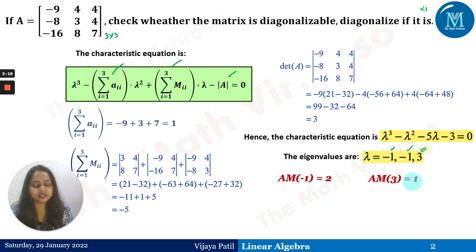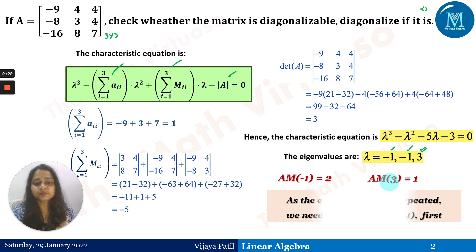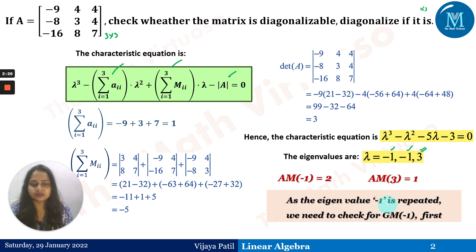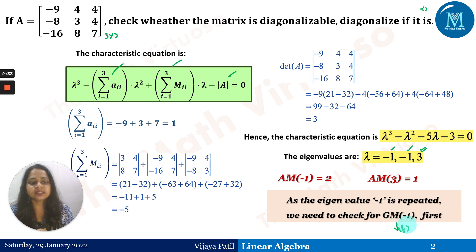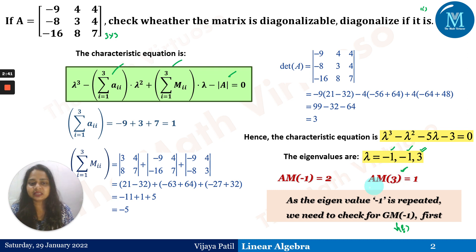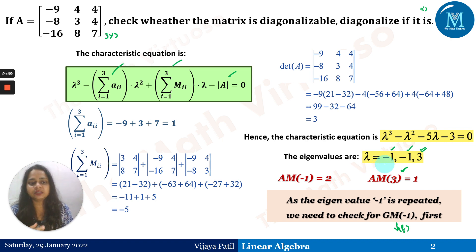Since eigenvalue −1 is repeated 2 times, we need to check the geometric multiplicity of −1. This is the decision-making statement for us. Rather than going directly to find the eigenvector for λ=3, we first find the eigenvector corresponding to λ=−1. We need to find the number of parameters, which is n minus the rank of (A − λI).